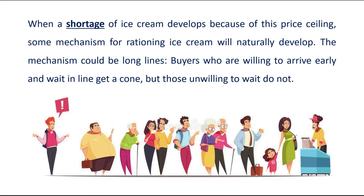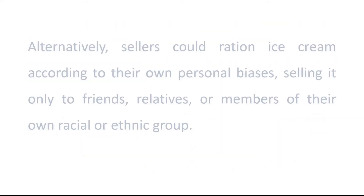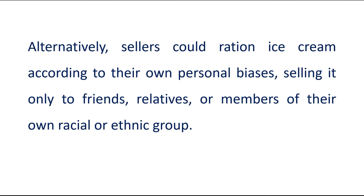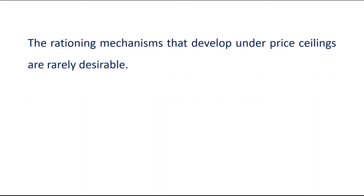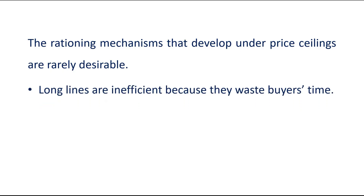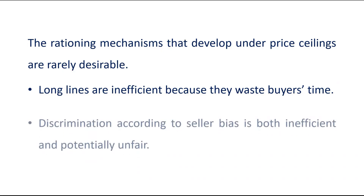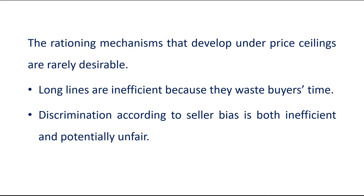When a shortage of ice cream develops because of this price ceiling, some mechanism for rationing ice cream will naturally develop. The mechanism could be long lines — buyers who are willing to arrive early and wait in line get a cone, but those unwilling to wait do not. Alternatively, sellers could ration ice cream according to their own personal biases, meaning selling it only to friends, relatives, or members of their own racial or ethnic group. The rationing mechanisms that develop under price ceilings are rarely desirable, because long lines are inefficient as they waste buyers' time, and discrimination according to seller biases is both inefficient and potentially unfair.